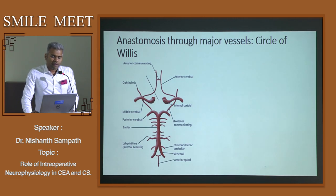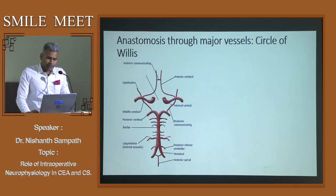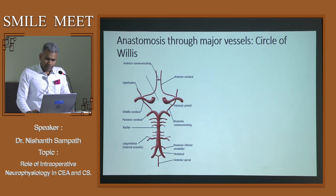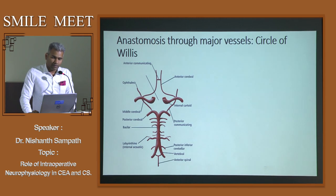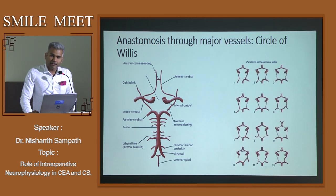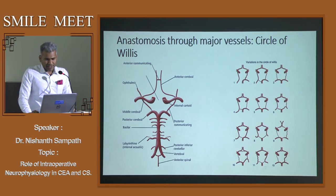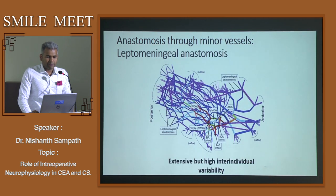Nature protects this delicate organ across wide pressure and oxygen requirement ranges through major anastomoses — the Circle of Willis. However, things are not always rosy; there are plenty of anatomical variations of the Circle of Willis.